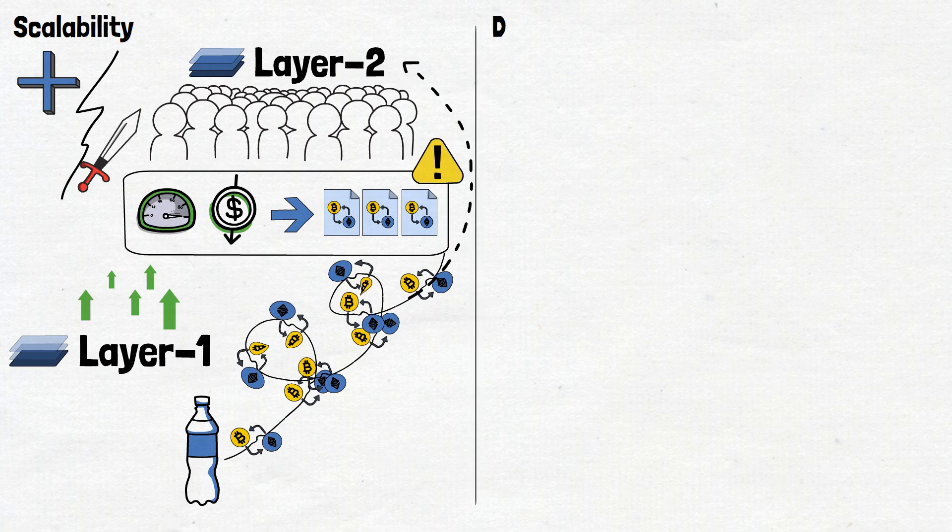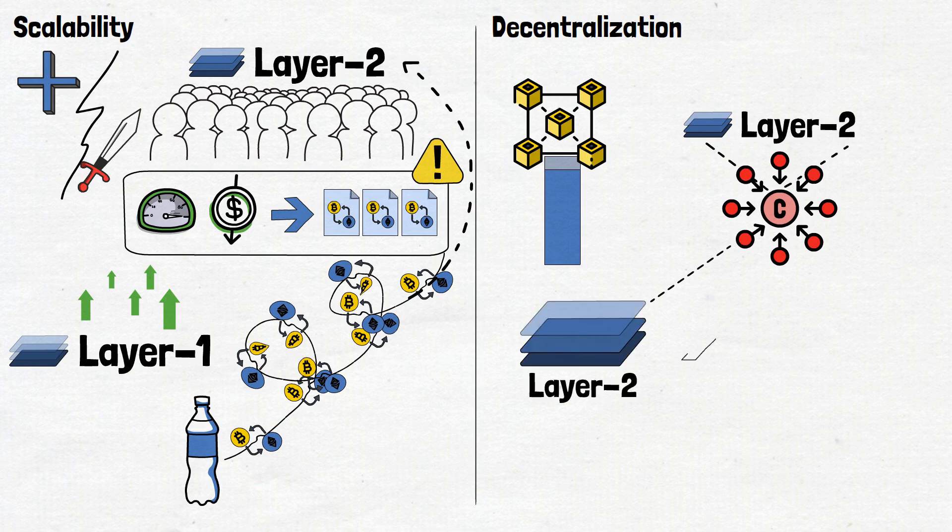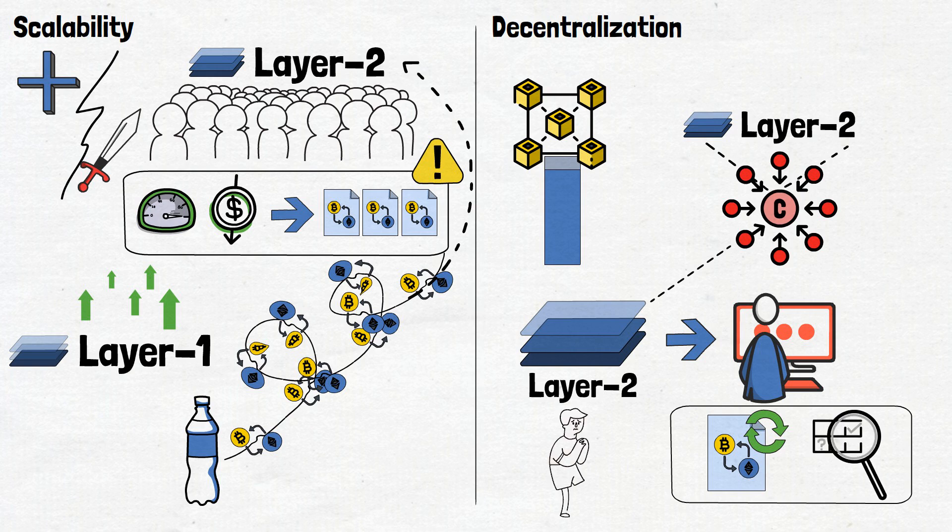And as you probably know, decentralization is a critical pillar of blockchain technology. However, some Layer 2 solutions might exhibit varying degrees of centralization. For instance, certain implementations might rely on trusted entities to facilitate transactions or monitor activities, raising concerns about decentralization and censorship resistance.